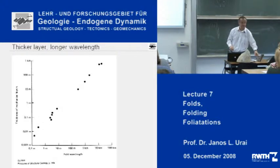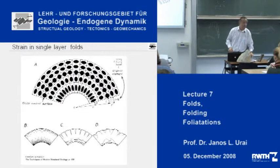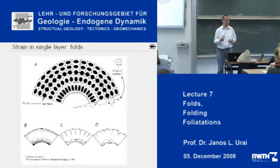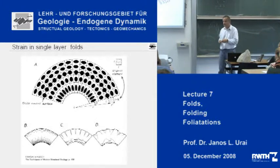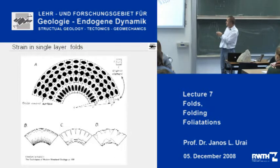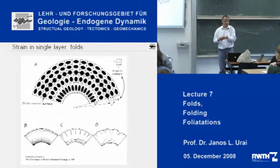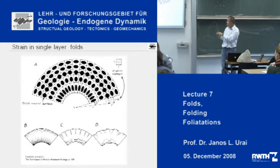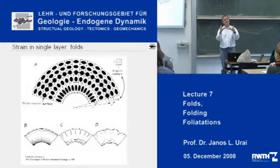If you look at folds like this, you can learn a lot about the strain in these folds. Strain analysis was discussed in one of the earlier lectures. If you are able to analyze the strain in folds like this, then what you see is that there is a neutral surface in the middle. In this neutral surface there is no strain at all. But outside, in the arc, the rock is extending. And inside, the rock is being shortened. So there is a lot of deformation in this layer itself.